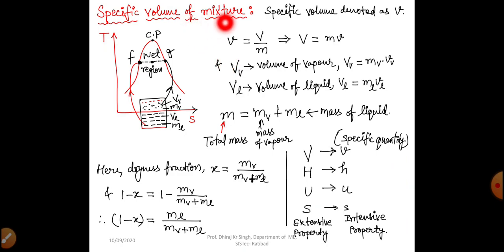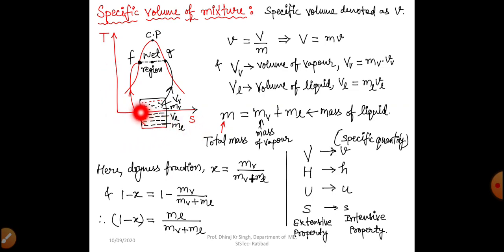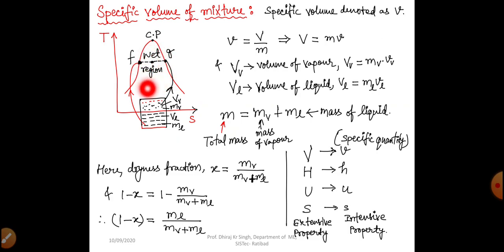Specific volume of mixture. Basically, we have shown here a T-S plane — temperature and entropy plane. In this we have drawn a dome where we can see the saturated liquid line and saturated vapor line, and the area under this dome is our wet region. We are focused here to find out the value of specific volume for this wet region.